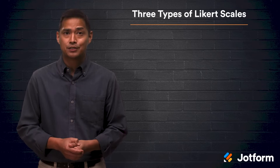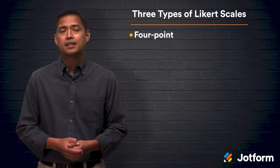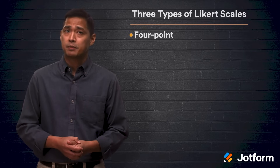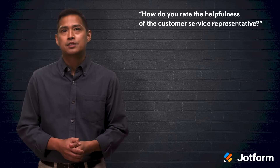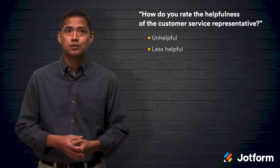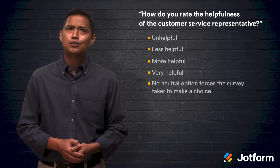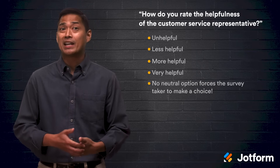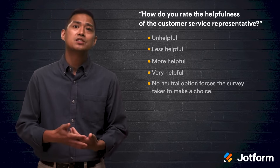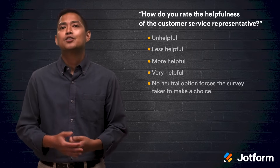Now that we've learned about what makes Likert Scales the amazing researching and surveying tools that they are, let's take a closer look at each one of those types. Coming in first as the most common Likert Scale is the four-point answer option, better known as the forced scale. It allows for a range of responses but takes away the ability to answer with a neutral response. For example: 'how do you rate the helpfulness of the customer service representative?' The four answer options would be something like unhelpful, less helpful, more helpful, and very helpful. This scale is used primarily for customer service-based surveys where one single question might be all that you get out of a survey taker.